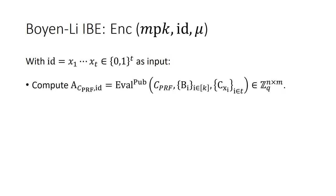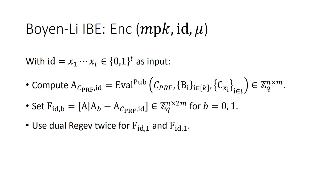For encryption algorithm, with ID in t-bit string as input, compute matrix A as the public homomorphic evaluation of cyclic PRF over matrix B_i and C_{x_i}, set matrix F_{ID,1-B} in this way for B equals 0 and 1, and then use dual Regev twice for encryption.